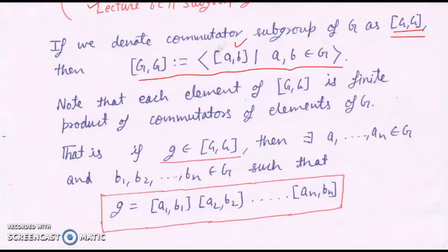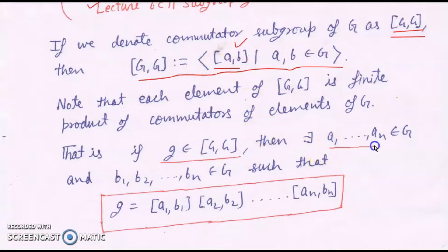Now how does an element of the commutator subgroup look? Suppose I take one element g in [G,G]. Then because the commutator subgroup is generated by commutators, there exist elements A1, A2, ..., An and B1, B2, ..., Bn in G such that g is the product of commutators [A1,B1][A2,B2]...[An,Bn].